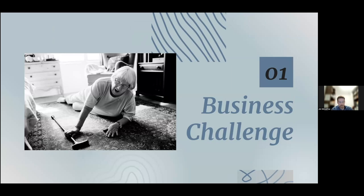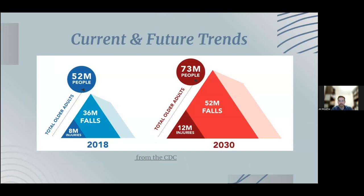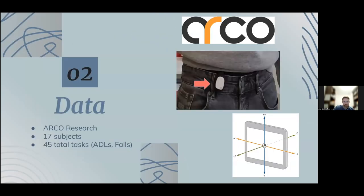As a physical therapist I started to wonder what role data science could play in detecting a fall, giving a real-time alert, and hopefully reducing the severity of injury and cost — and allowing an older adult to stay in their home longer and live independently. This illustration from the CDC shows the projected increase of total older adults in our population by 2030, as well as the increase in falls and injuries related to falls.